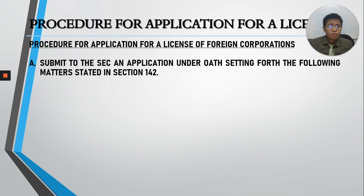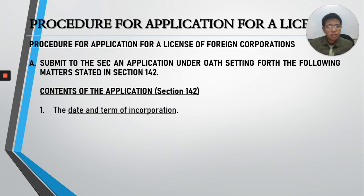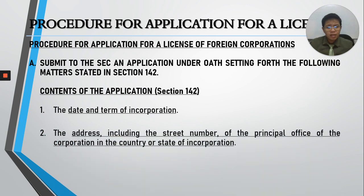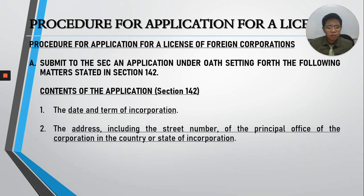The contents of the application include: the date and term of incorporation — if already in the articles, no need to repeat it; the address including street number of the principal office of the corporation in the country or state of incorporation. For example, a foreign corporation incorporated in Germany must indicate the address in Germany including the street number.